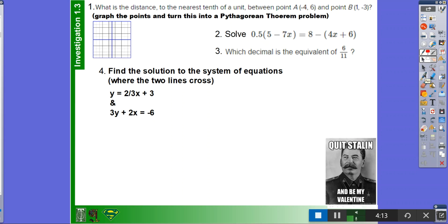But since there's 3y, you first have to multiply two-thirds x plus 3 times 3, which would be equal to 2x plus 9. And then you can substitute that for y. So then you would get the equation 2x plus 9 plus 2x is equal to negative 6.